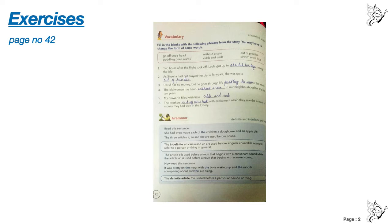Stretch her legs along the aisle. Don't say easily, okay? It's aisle. S is silent. Number two, as Sheena had not played the piano for years, she was quite out of practice. No changes here. Simply, you write out of practice.